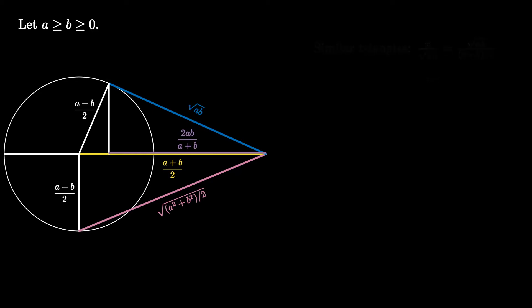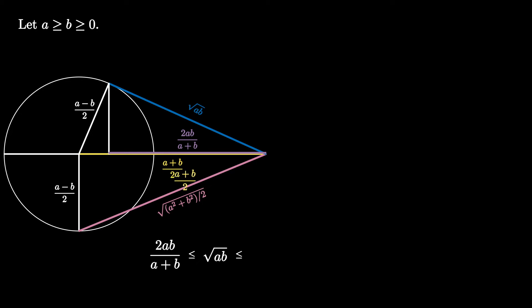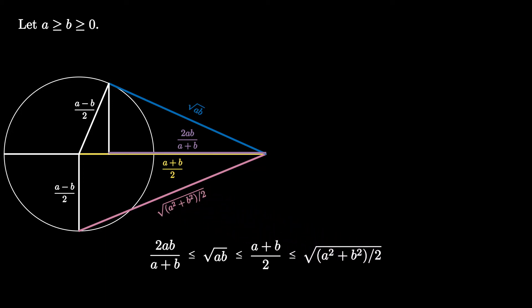Working backward, we see that 2ab over (a plus b) is the leg of a right triangle with hypotenuse the square root of (a times b), so 2ab over (a plus b) is less than or equal to the square root of (a times b). But the square root of (a times b) is the leg of a right triangle with hypotenuse (a plus b) over 2, so the square root of (a times b) is less than or equal to (a plus b) over 2. And (a plus b) over 2 is a leg in a right triangle with hypotenuse the square root of (a squared plus b squared) over 2, so (a plus b) over 2 is less than or equal to the square root of (a squared plus b squared) over 2.